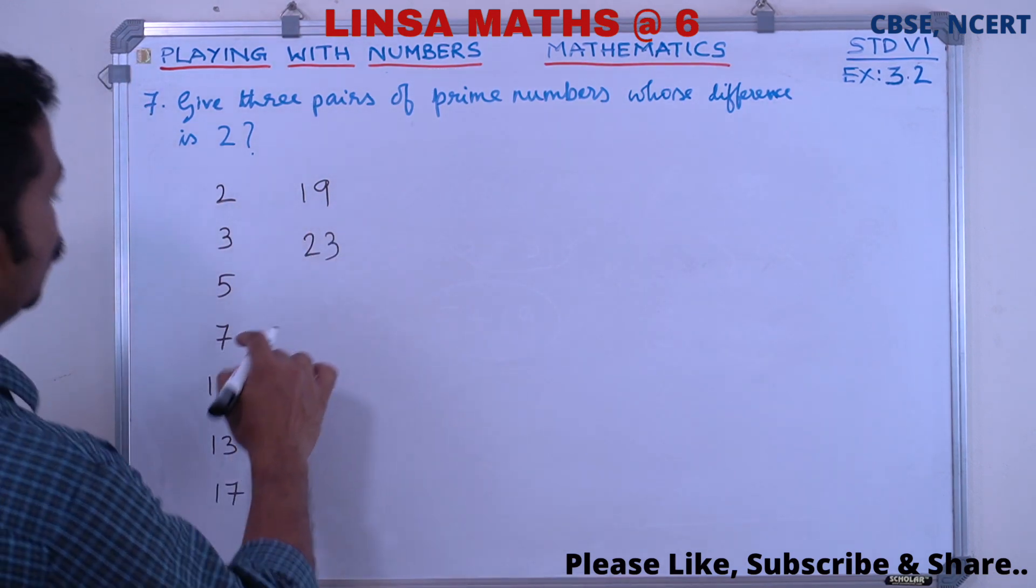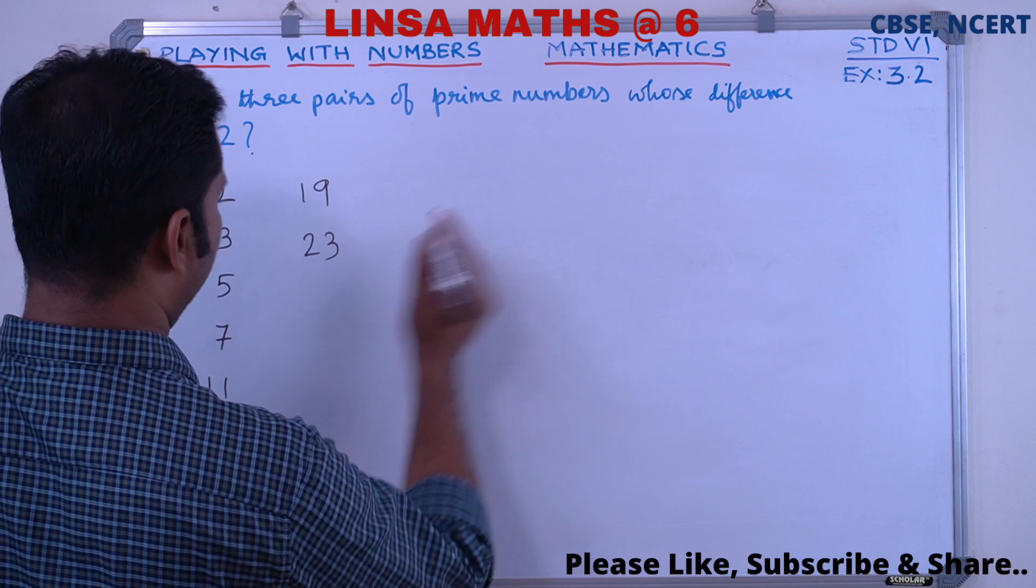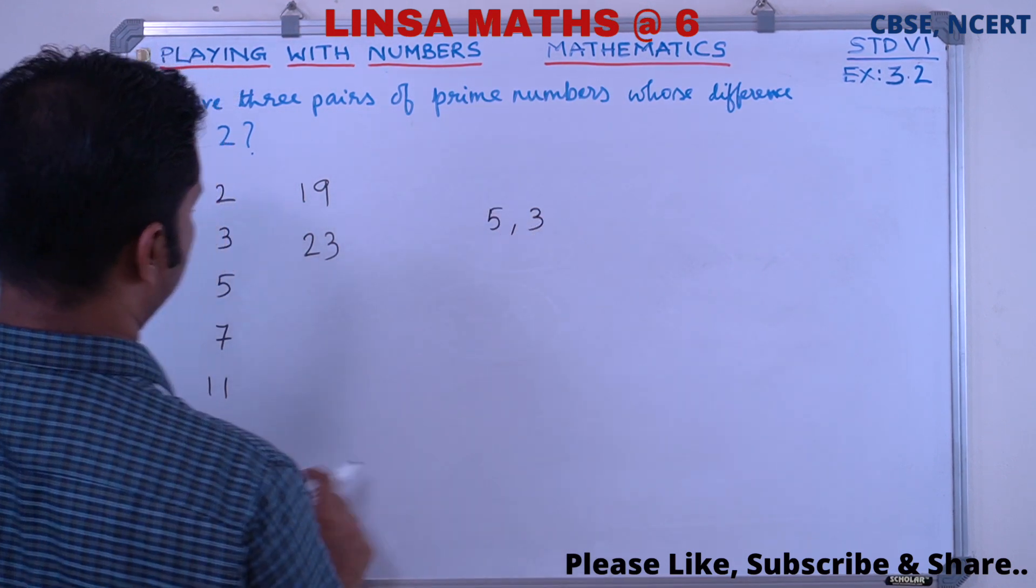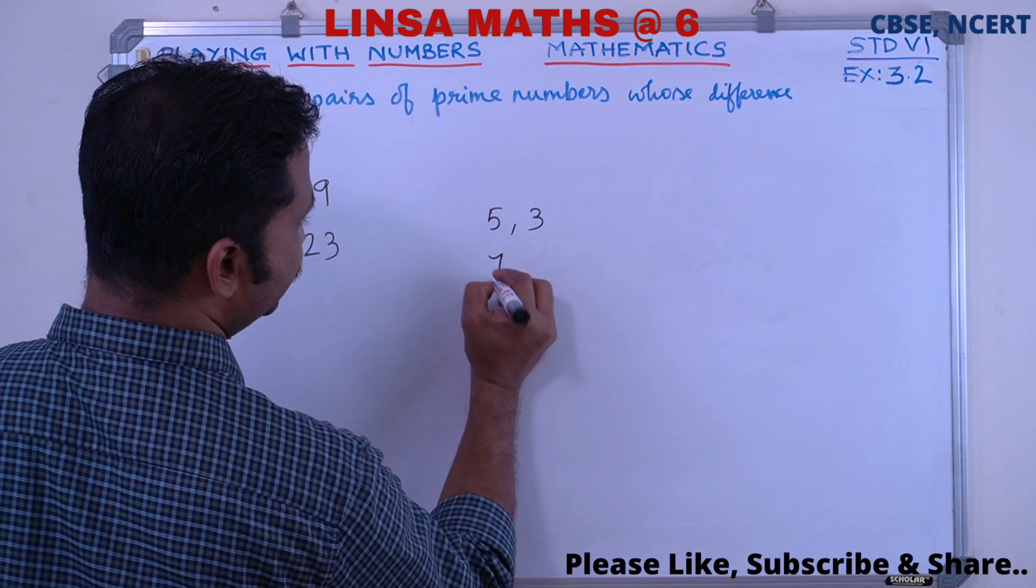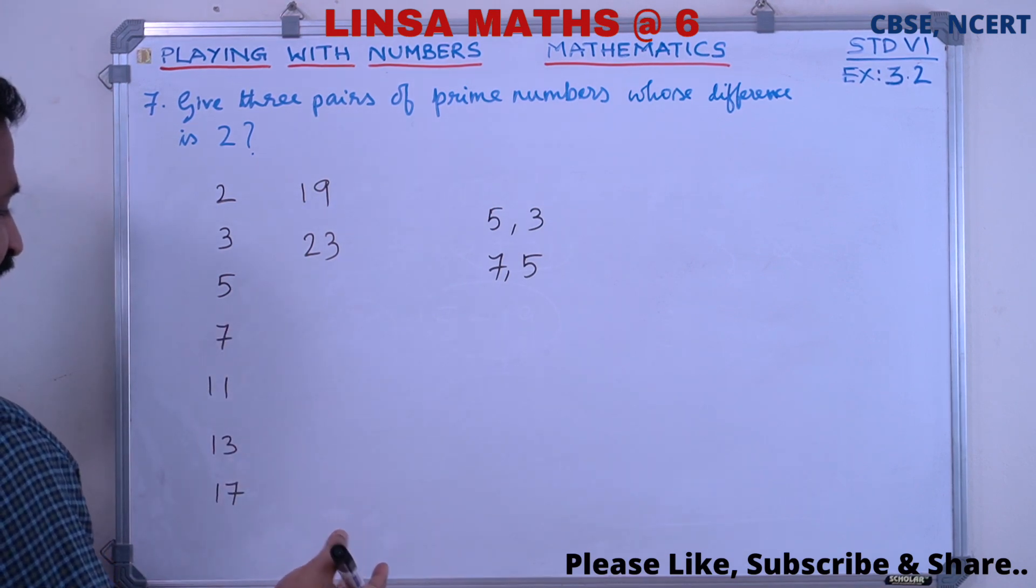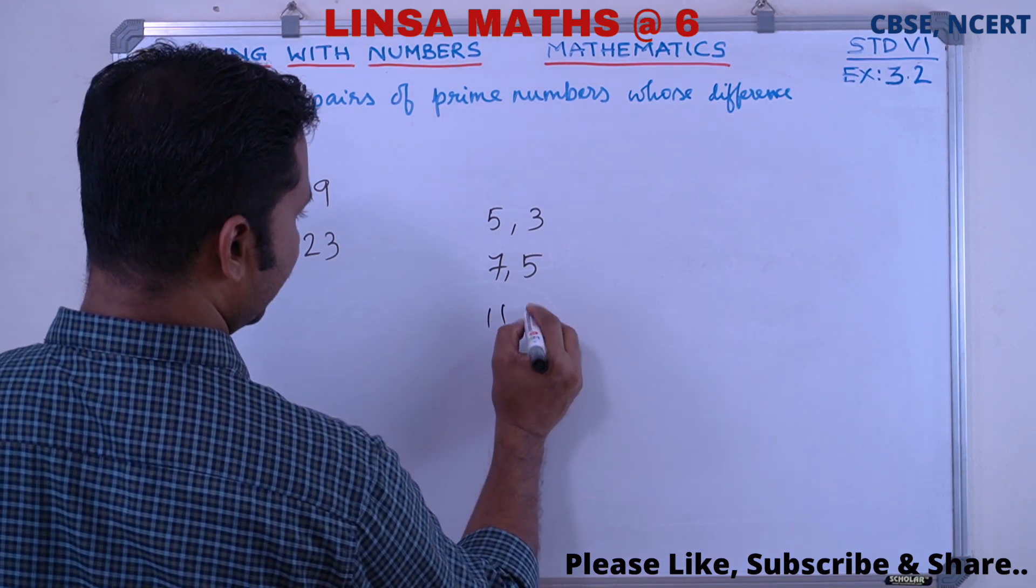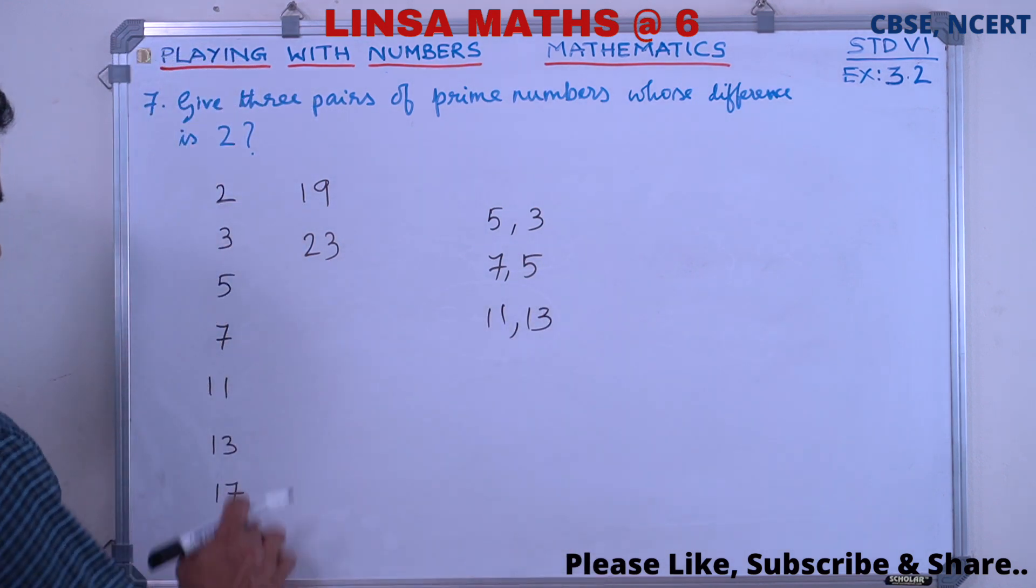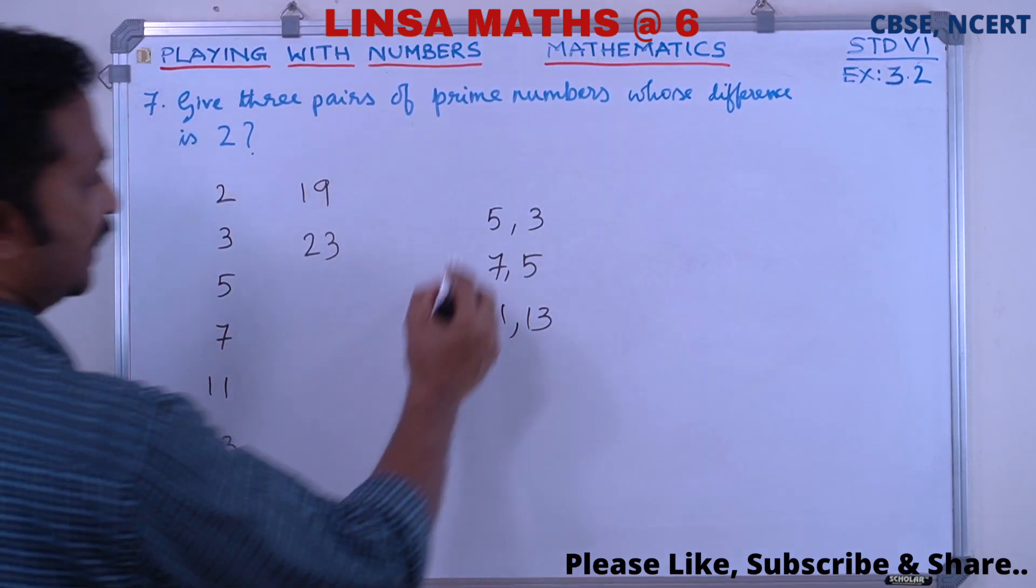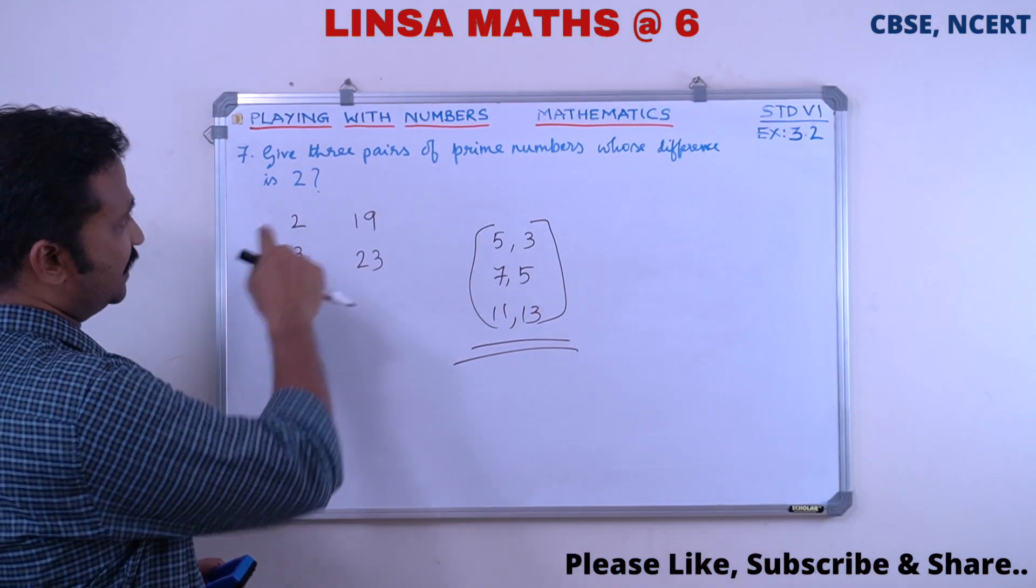Now checking the differences. 5 minus 3 is 2. 7 minus 5 is 2. 11 minus 7 is 4. 13 minus 11 is 2. 11 plus 2 is 13. For 3 pairs: 17 minus 13 is 4, 23 minus 19 is 4.